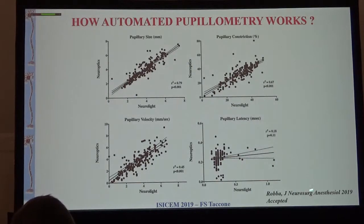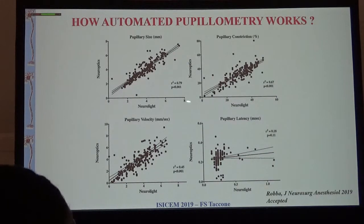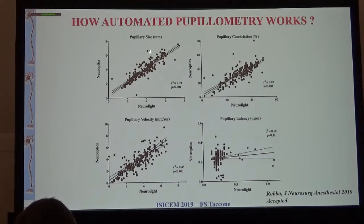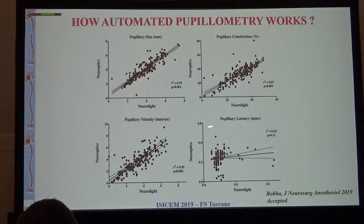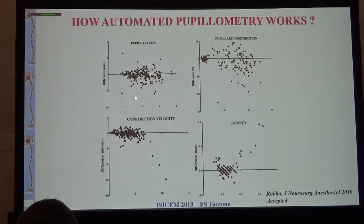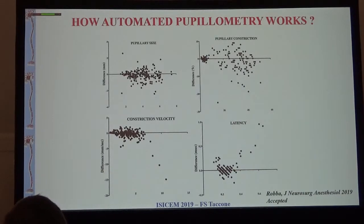Are they the same? This is a paper just accepted yesterday in GNA from our group. We compared the two systems and found that if you evaluate size, constriction, and velocity, there is a good correlation - but not for latency, because the way latency is measured differs between the two systems. The three other variables correlate well, but the Bland-Altman analysis shows a difference, meaning they are not interchangeable. If you use a cut-off from one device published in a study, you cannot apply the same cut-off using the other device. So when you read the literature, it is very important to check which device was used.